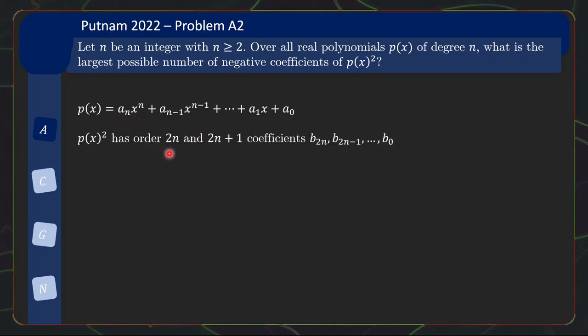And P(x)² has order 2n, and 2n plus 1 coefficients, which let us call them b_2n until b_0, in decreasing order of the powers. So how do we compute these coefficients in terms of the original a's? Well, this is nothing too complicated, it's just a reminder.